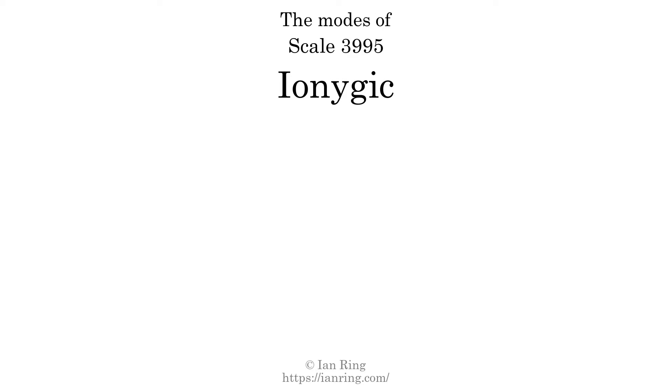Here is a Hamiltonian path of parsimonious voice leading that uses all the triads. This scale has 9 modes. The first mode is itself. The second mode is scale 4045, also known as Gyptagic.